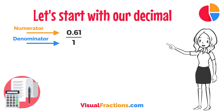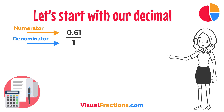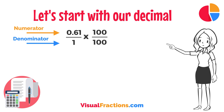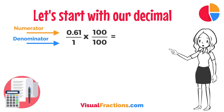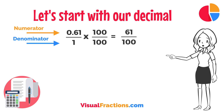This sets up the conversion process where we multiply both the numerator — the decimal — and the denominator, 1, by 100 because there are two decimal places. So, 0.61 times 100 gives us 61, and 1 times 100 gives us 100. This translates 0.61 to the fraction 61 over 100.